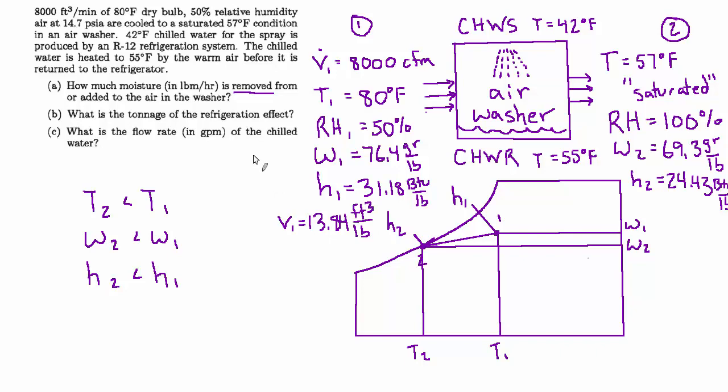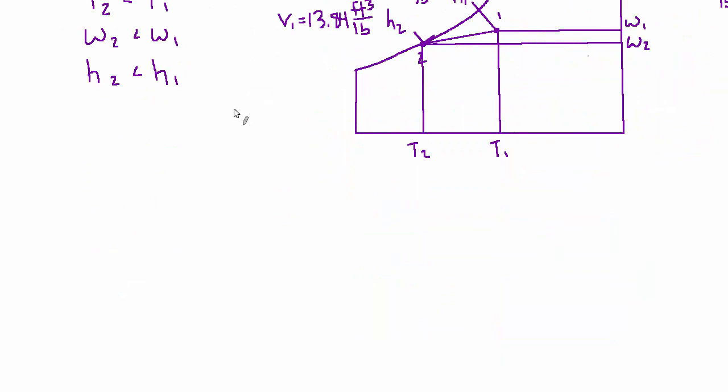Alright, so now that we have most of the numbers that we need, let's go after some of these answers. We'll start with the moisture removal. So the formula we want to use here is that the mass flow rate of water is equal to the mass flow rate of air times the difference in the humidity ratio going in and going out. So state 1 minus the humidity ratio at state 2. Where the mass flow rate is simply the volume flow rate which we know divided by the specific volume which we just looked up. So this is all for state 1.